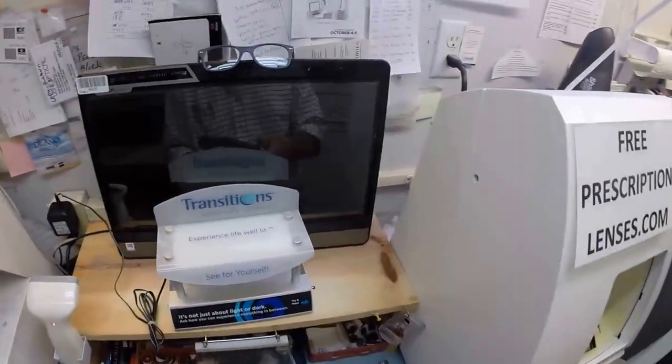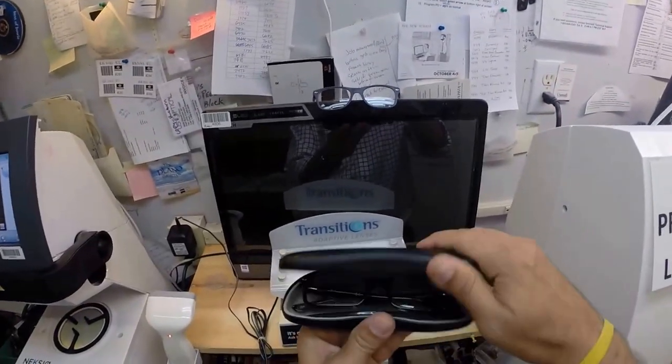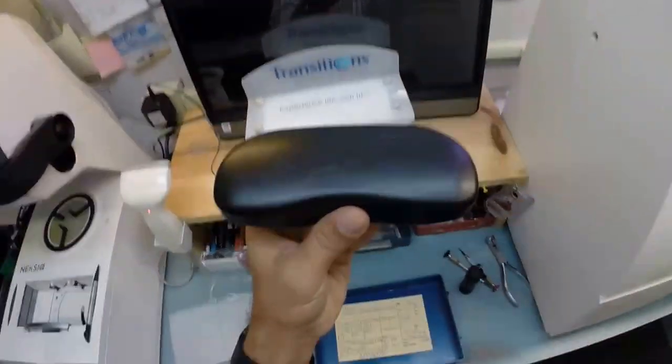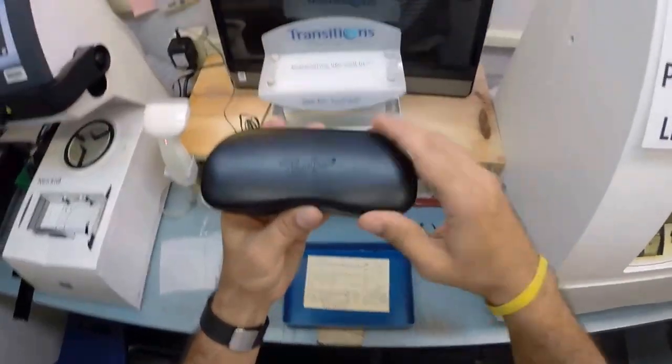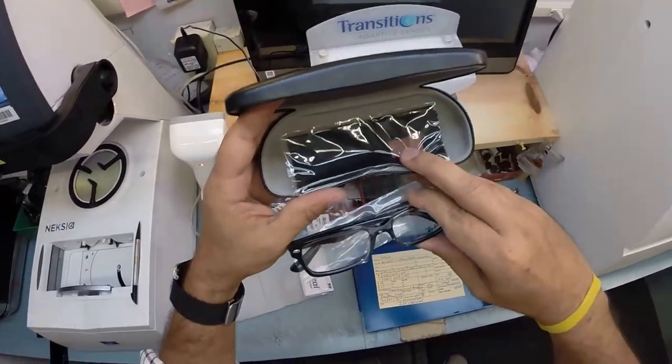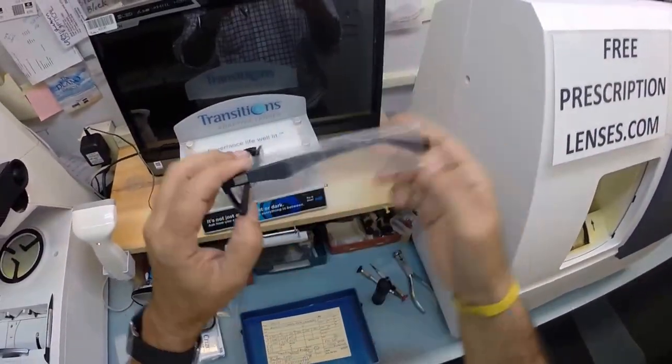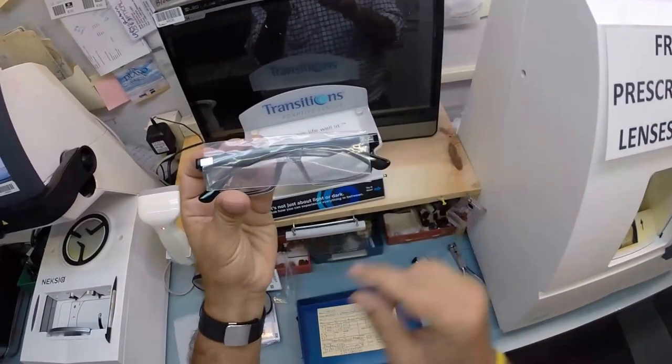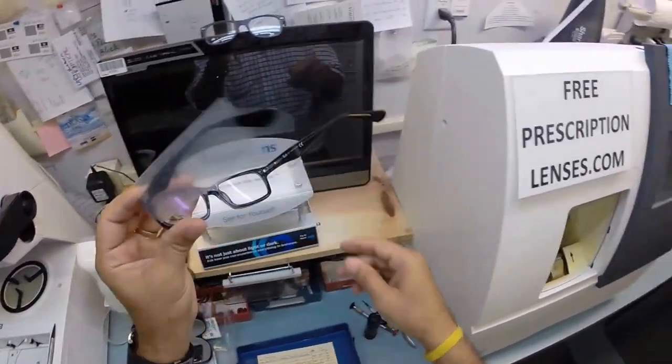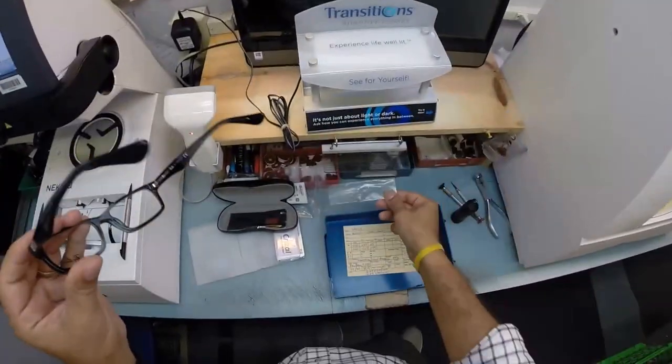I'm going to take everything out of the original packaging as it comes to me. Your hard shell clam shell case, your Ray-Ban cleaning cloth, and your Ray-Ban frame which comes with a little plastic sleeve on the left temple to protect the temples from rubbing together while it's being shipped. I will keep that on there when I ship to you, but I'm going to take it off for now.